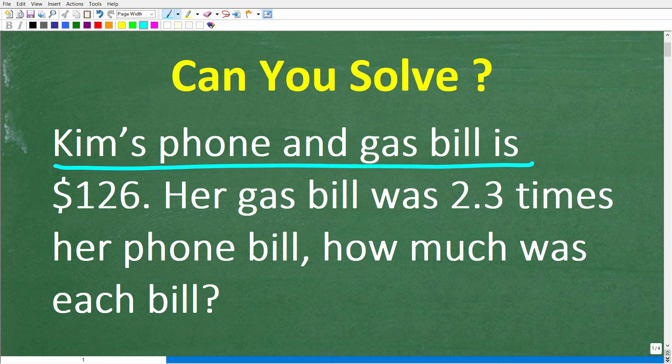Kim's phone and gas bill is $126. Her gas bill was 2.3 times her phone bill. How much was each bill?